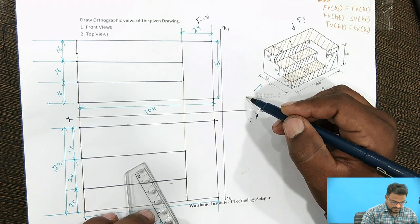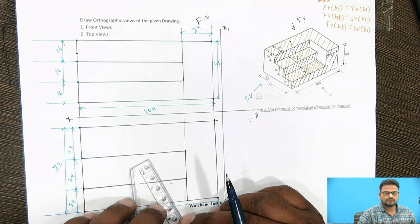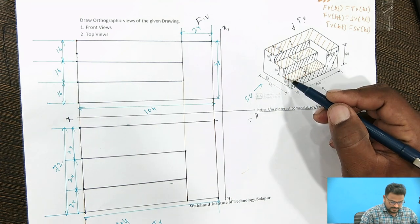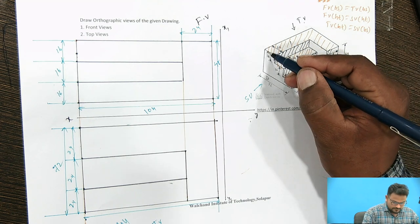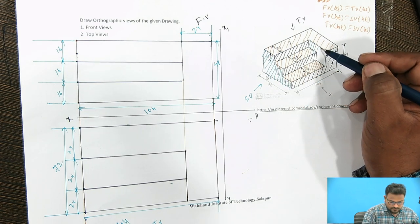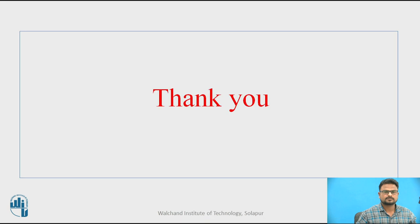Now we are going to see the side view. Pause the video and think about what the side view will be. When we see from the side view, this portion will be visible, and this portion as well. These are the references I have taken for this example: Engineering Graphics by Srit Thakur Dinesh Singh, Mahalakshmi Publishing House. Thank you.